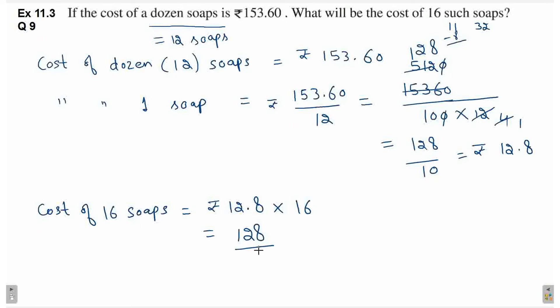Ab yahaan par phirsae mein is ka decimal remove kar doongi. This will be 128 divided by 10 multiply by 16. Ab aap is ko solve kar lo. Ya toho aap siedha hi 128 ko 16 ke saat multiply kar do. Phir ek digit chhodke decimal laga do.